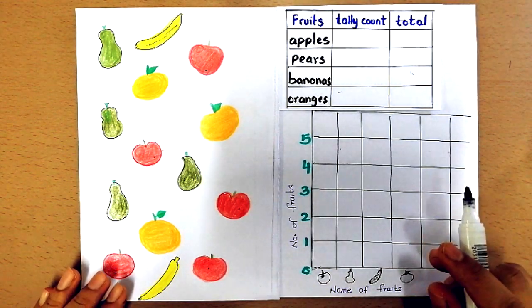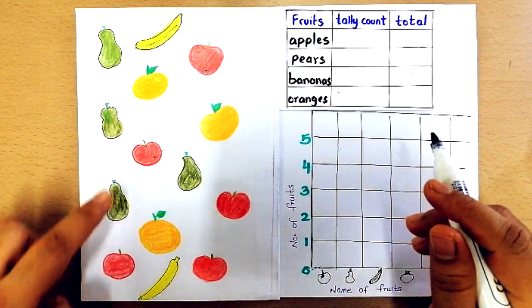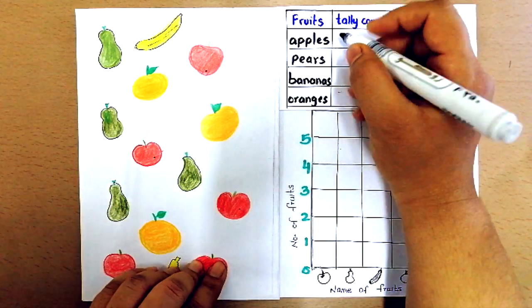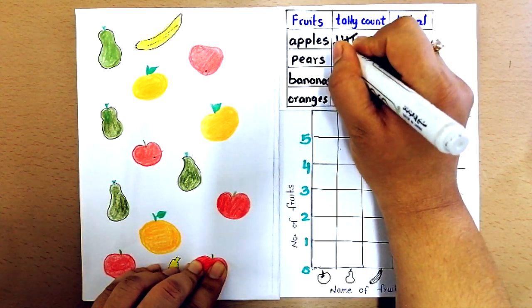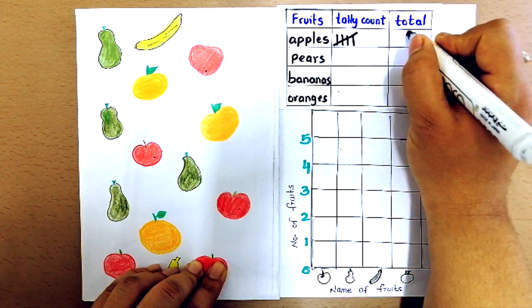Let's count the apples first. 1, 2, 3, 4, 5 so let's write like this 1, 2, 3, 4, 5 is a cross line so you write the total 5.